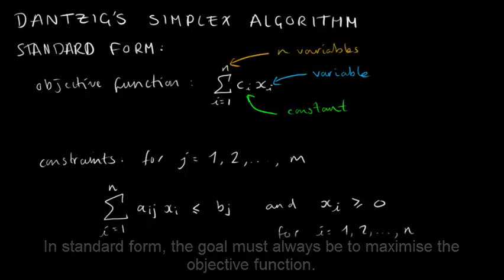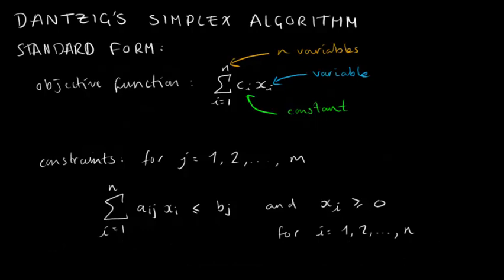Similarly, in the objective function, each of these variables has a coefficient denoted by c with a subscript value from 1 to n. This means the objective function simply can be any linear combination of the n variables.